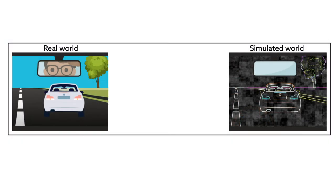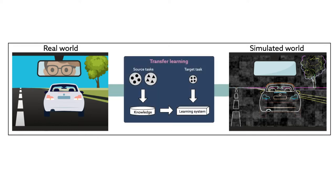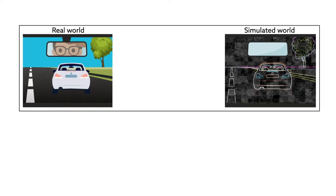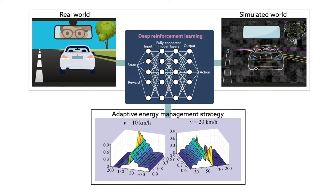As a proof of concept, the team applied their so-called parallel reinforcement learning approach to manage the energy use of a hybrid electric vehicle. Transfer learning made the computed management strategies adaptive to real-world driving conditions, while reinforcement learning generated the corresponding controls.